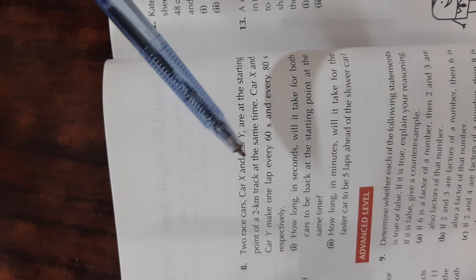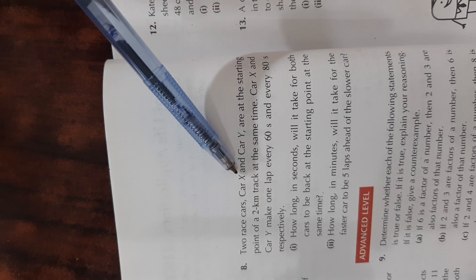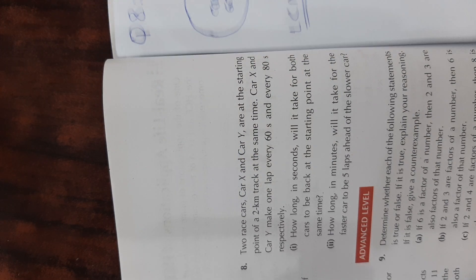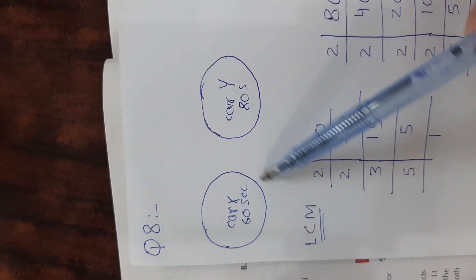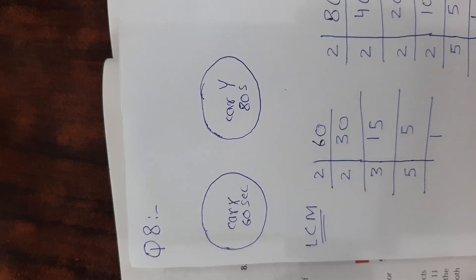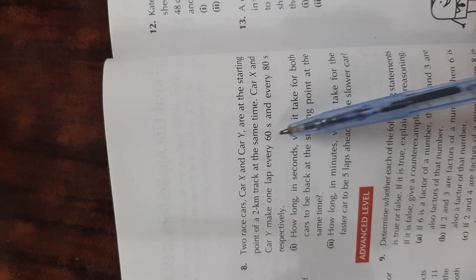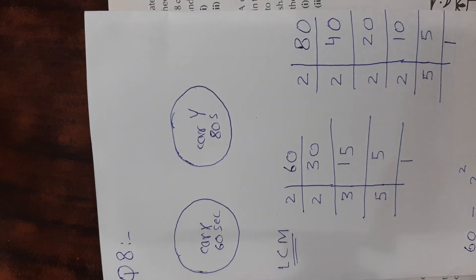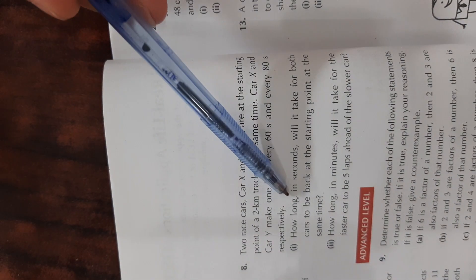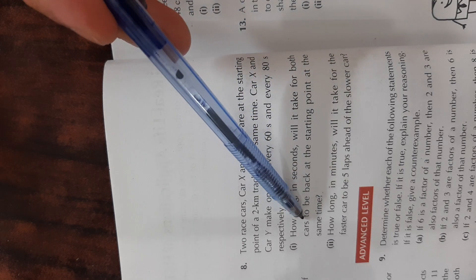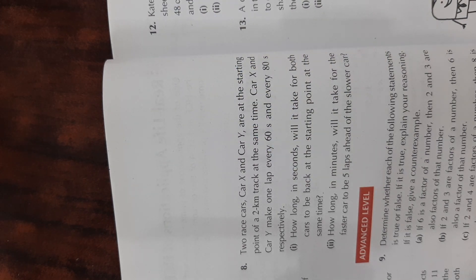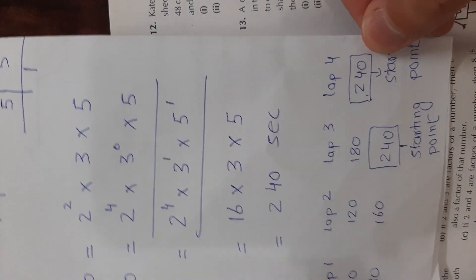Question number 8: two race cars, car X and car Y, start at a point on a two-kilometre track. Car X completes one lap in 60 seconds while car Y is slower, completing one lap in 80 seconds. The question is: how long in seconds will it take for both cars to be back at the starting point at the same time? There are two possible approaches.